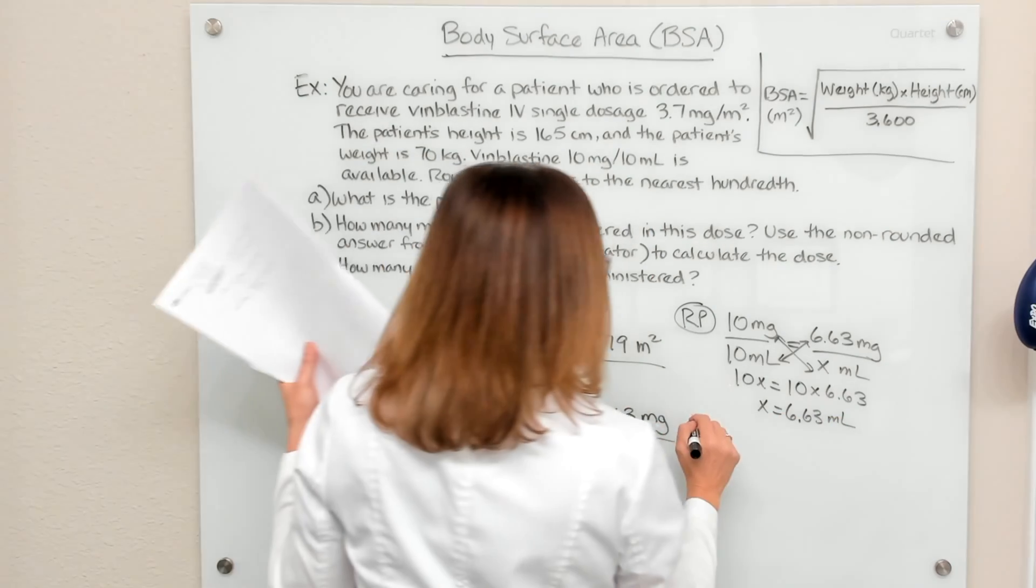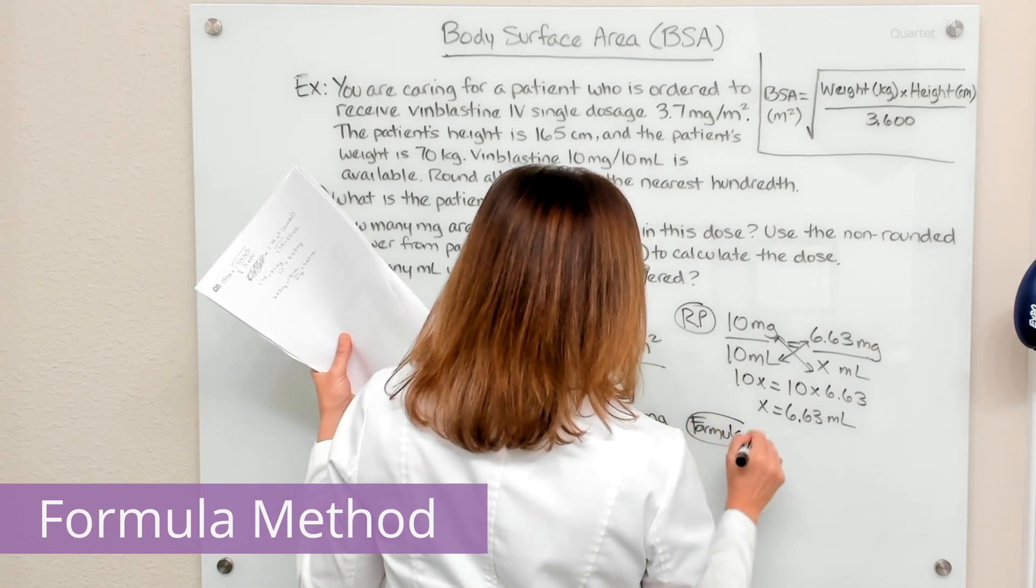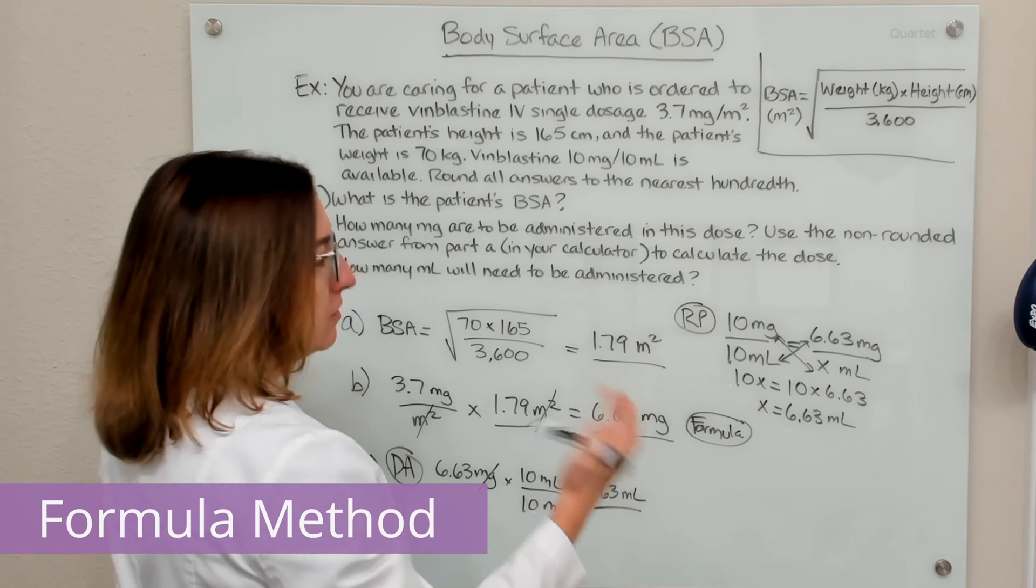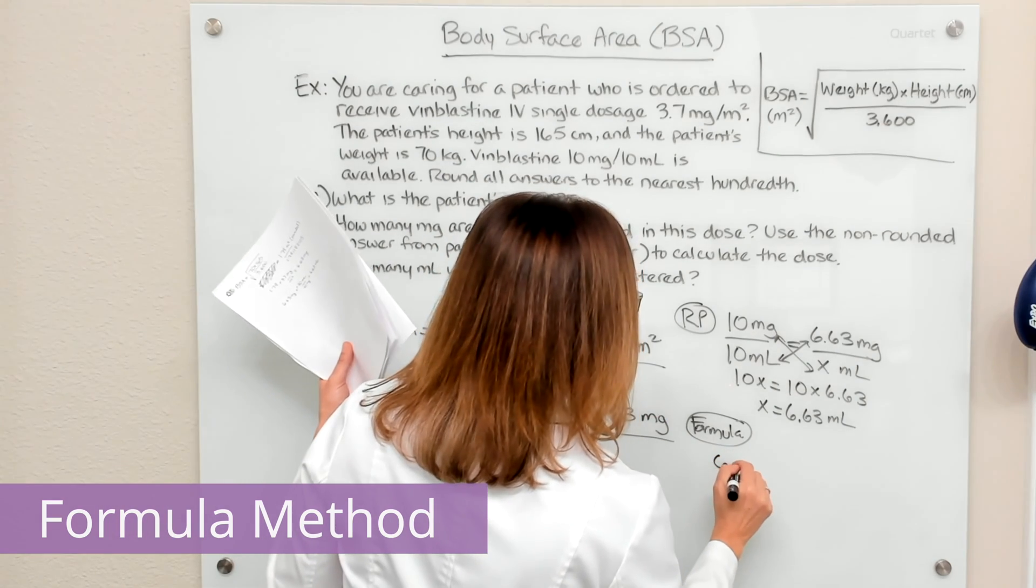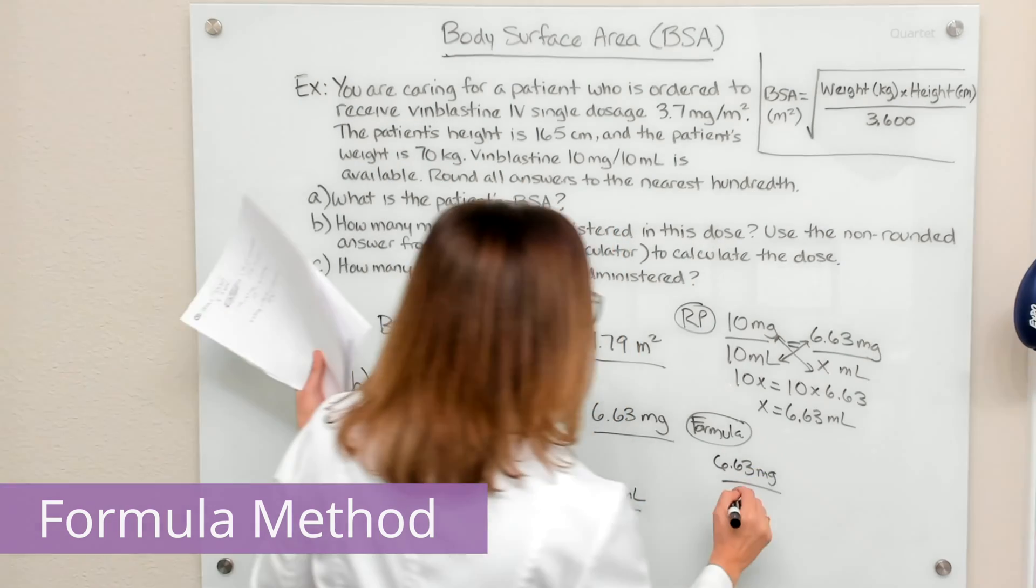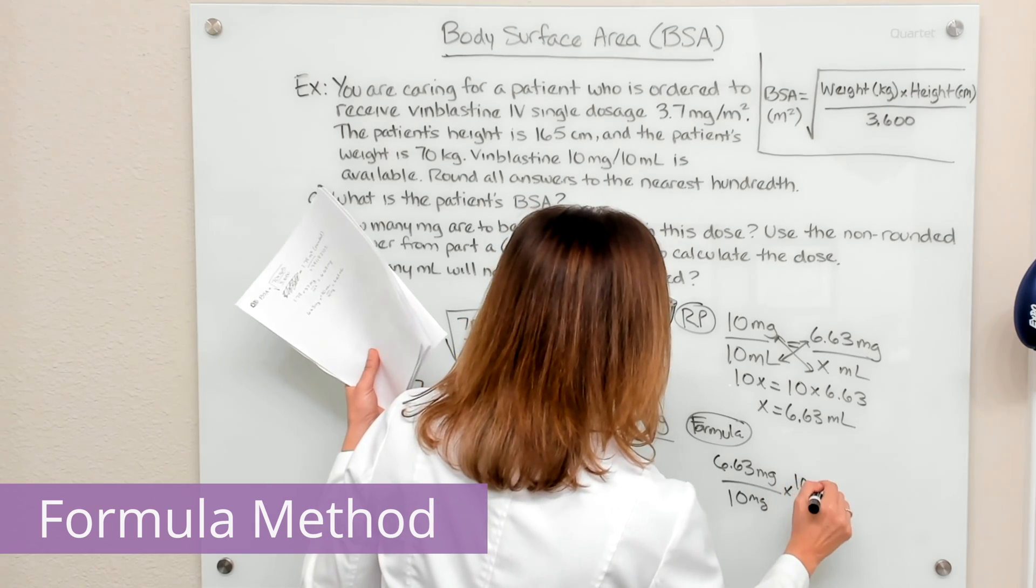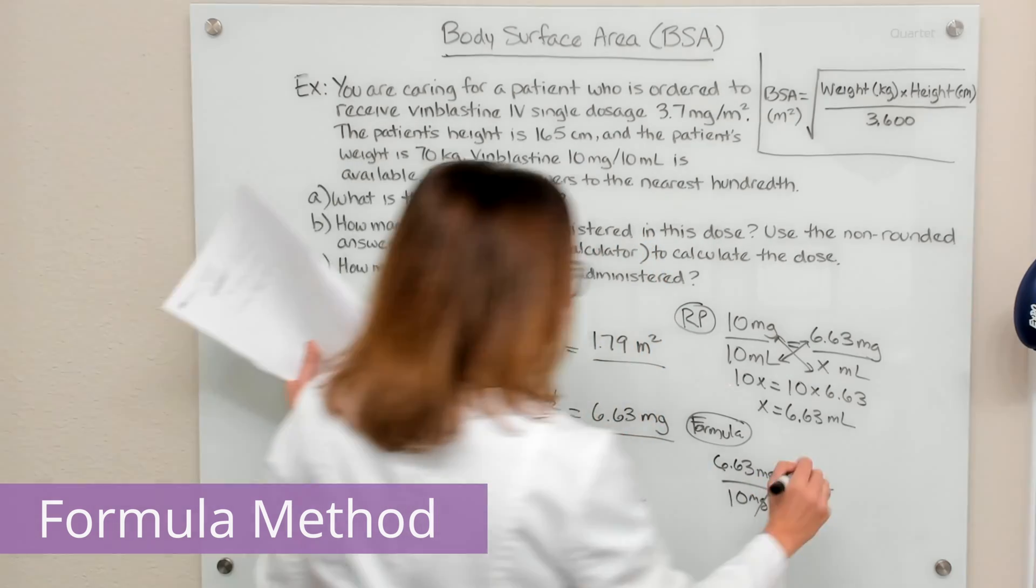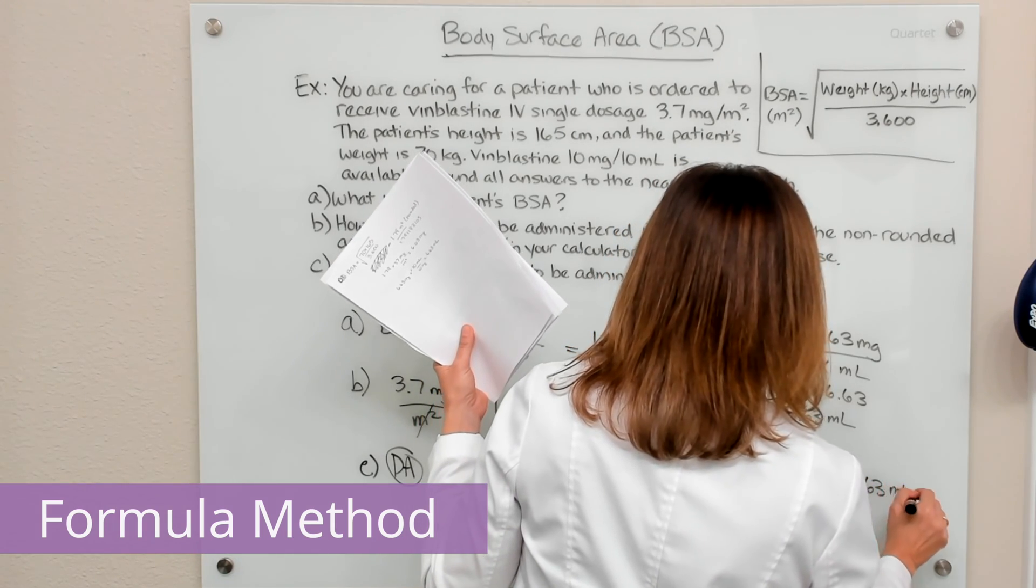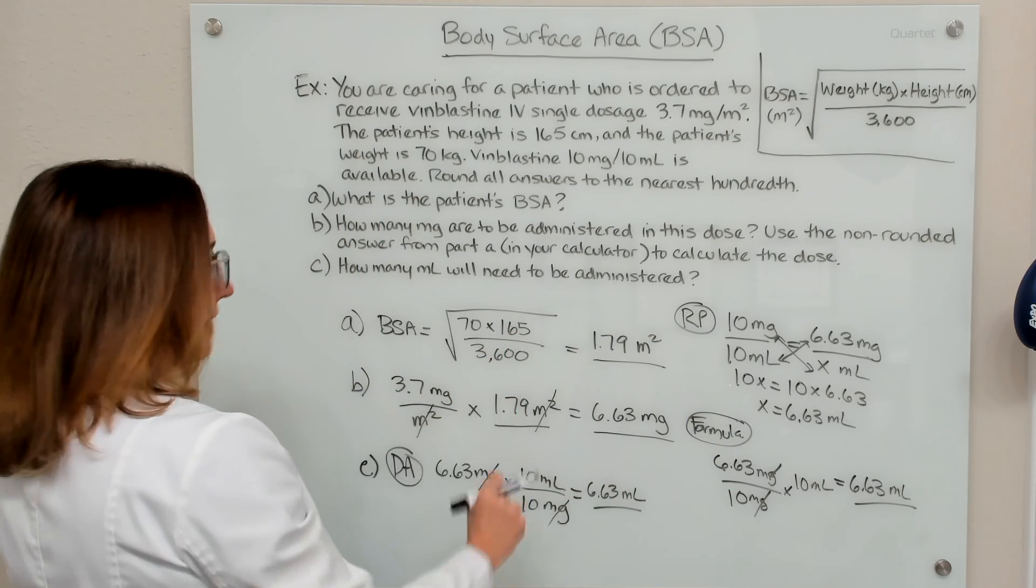And then finally, with the formula method, the formula method is desired over have times the vehicle. So we desire 6.63 milligrams. And what we have is 10 milligrams in 10 mls of solution. So if we multiply this out, we end up with 6.63 milliliters again, three different ways to get to the same answer.